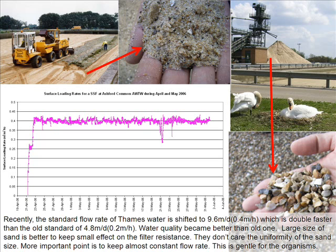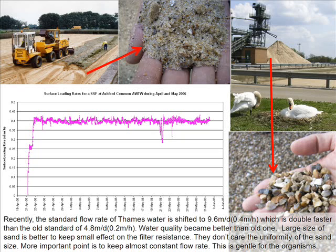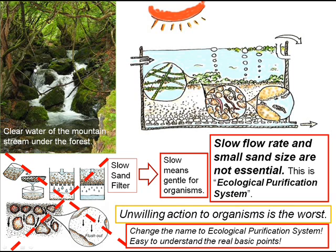Recently, the standard flow rate of Thames Water in London has been shifted to 9.6 m per day, which is double the old standard of 4.8 m per day. Water quality became better than the old one. Large size of sand is better to keep the filter resistance small. They do not care about the uniformity of sand size. The more important point is to keep an almost constant flow rate — this is gentle for the organisms. Slow sand filter is not a mechanical sieving by fine sand and slow flow rate. Slow means gentle for organisms. Slow flow rate and small size of sand are not essential. This is an ecological purification system.